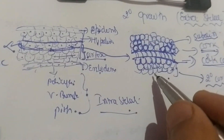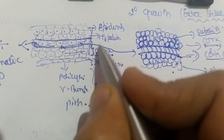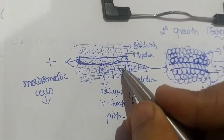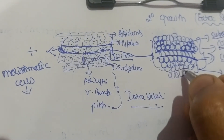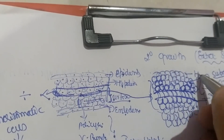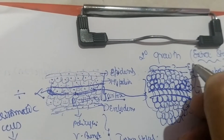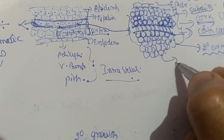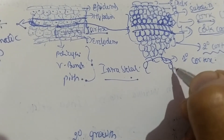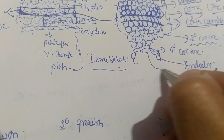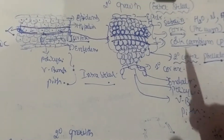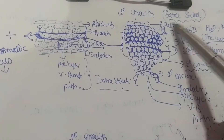Inner to the secondary cortex, only this single layer de-differentiated and formed this entire structure. So inner to that layer we still have the remaining layers of primary cortex. Outward to that is hypodermis, and outward to hypodermis is epidermis. Inner to the primary cortex is endodermis; inner to endodermis is pericycle; inner to pericycle is vascular bundle; and at the center is pith. This is the entire structure of secondary growth in the extrastele region.